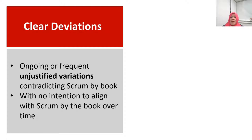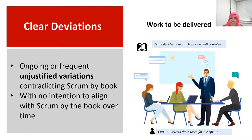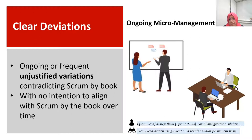Last, we have clear deviations. These are ongoing or frequent unjustified variations contradicting Scrum by the Book, with no intention to align with it over time. The Primer states the team decides how much work it will complete. In practice, we found the product owner deciding how much and what work the team will deliver during the sprint. Online micromanagement is neither supported by the Primer or Guide, but we found multiple instances of team lead-driven assignment on a regular basis as clear deviations.